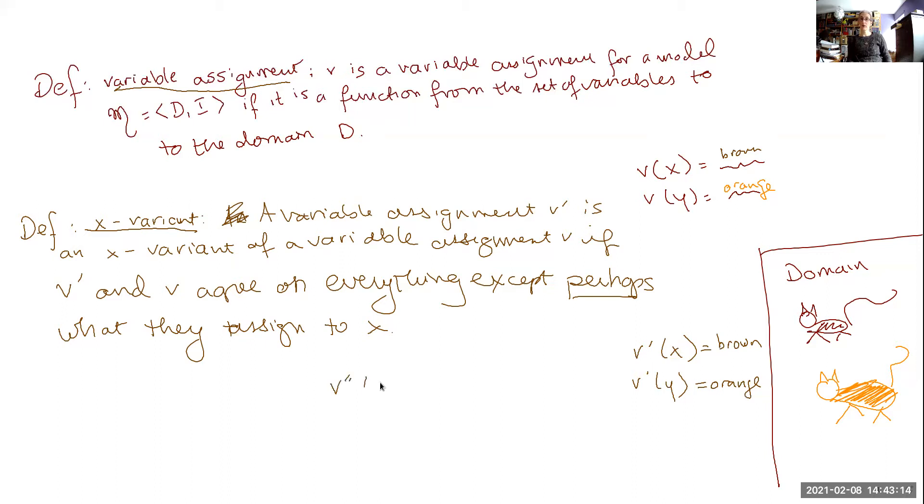Consider the variable assignment, v double prime, though, which assigns x to the orange cat and keeps y assigned to the orange cat as well.